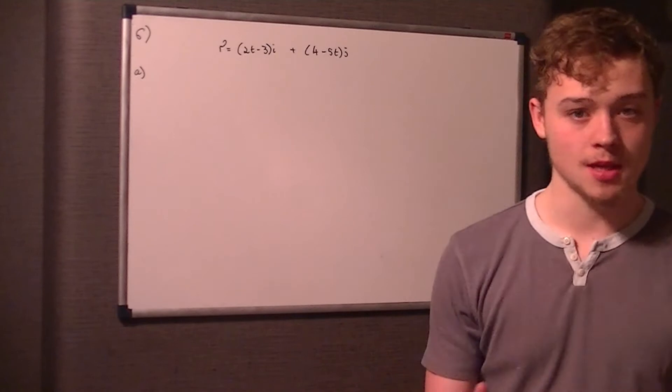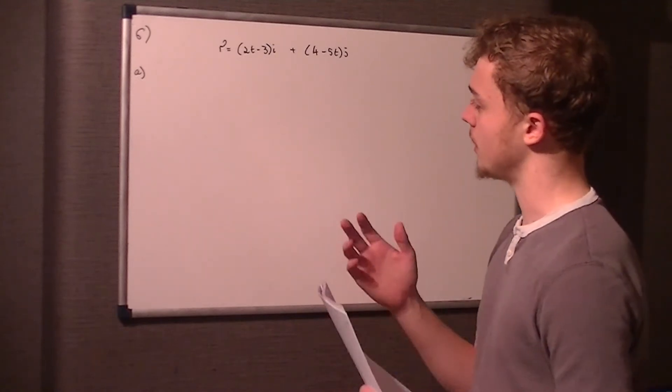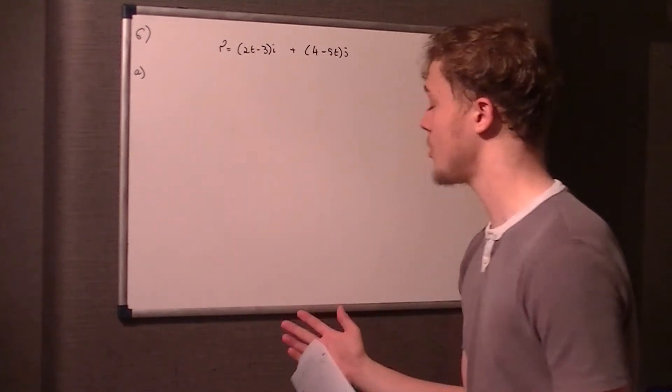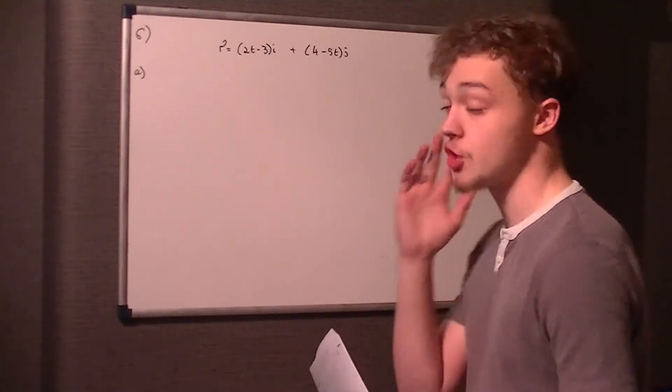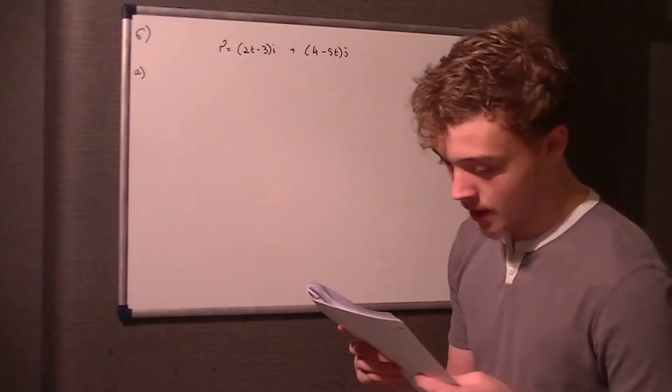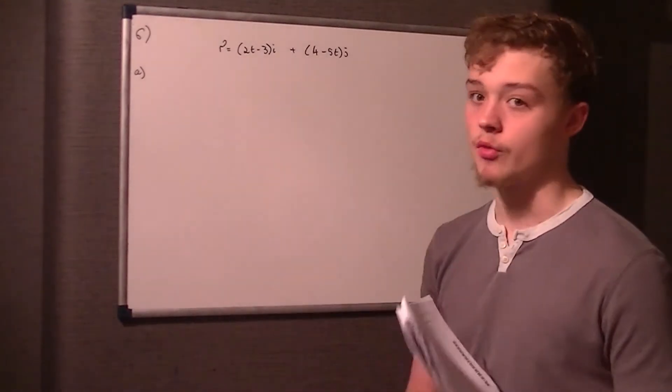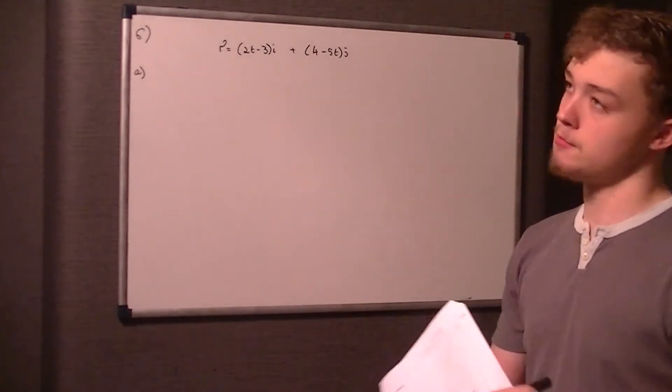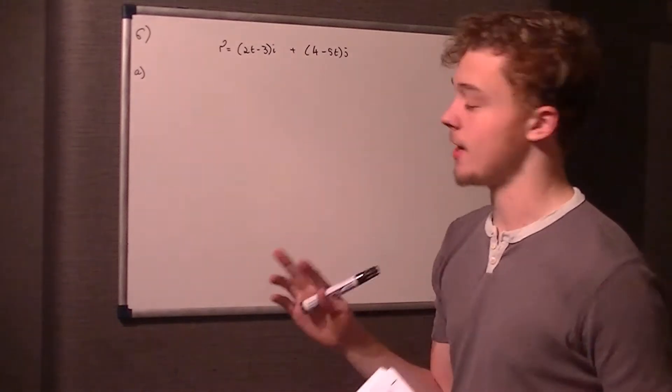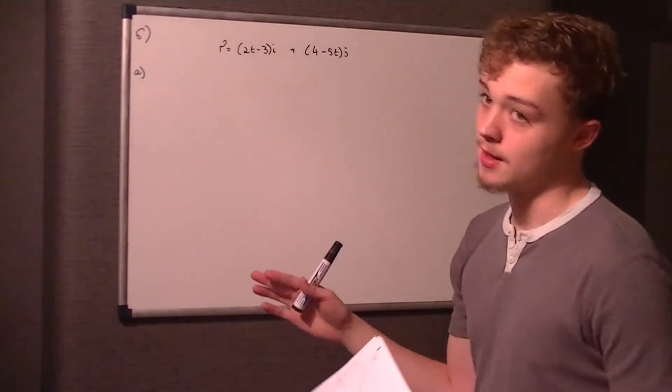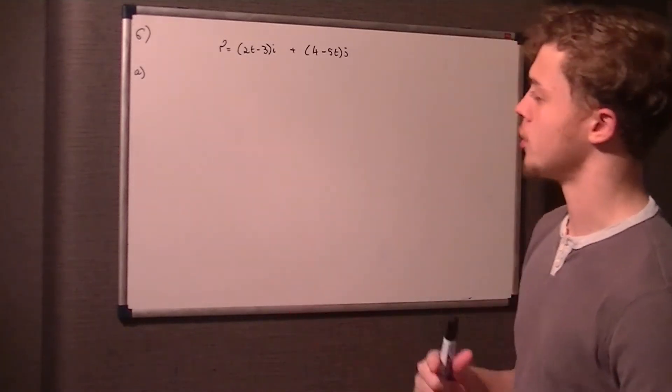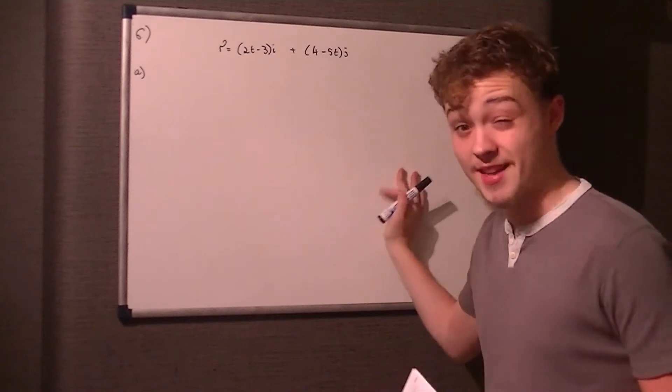So we're given this vector equation, or position vector equation: in the i direction 2t - 3, and in the j direction we've got 4 - 5t. Now t obviously is the parallel vector, bit of a hint to a later thing there. So the parallel vector is 2t in the i direction and -5t in the j direction, because t is a constant thing.